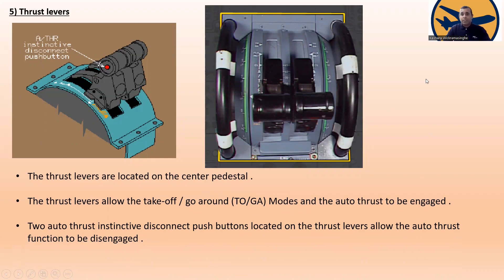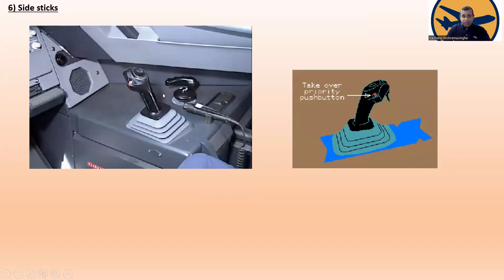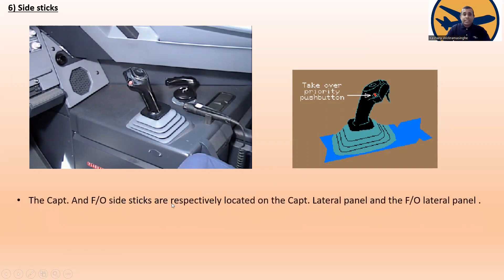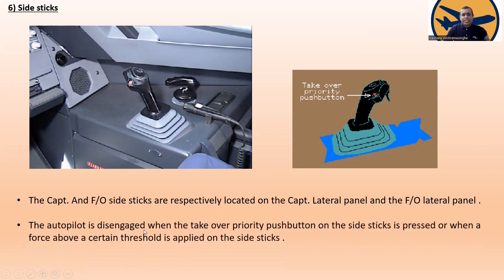Now the side sticks. Here is the side stick with the takeoff priority push button. The captain and first officer side sticks are respectively located on the captain lateral panel and the first officer lateral panel. The autopilot is disengaged when the takeoff priority push button on the side stick is pressed, or when a force above a certain threshold is applied on the side sticks.